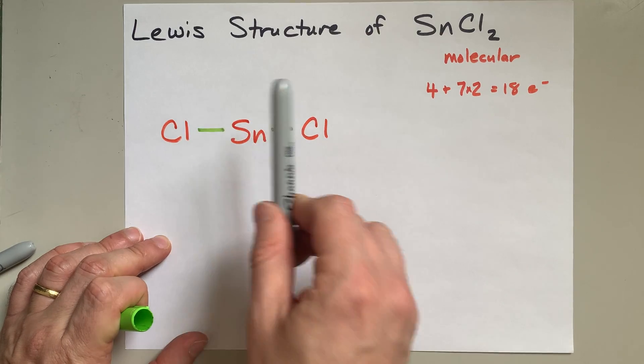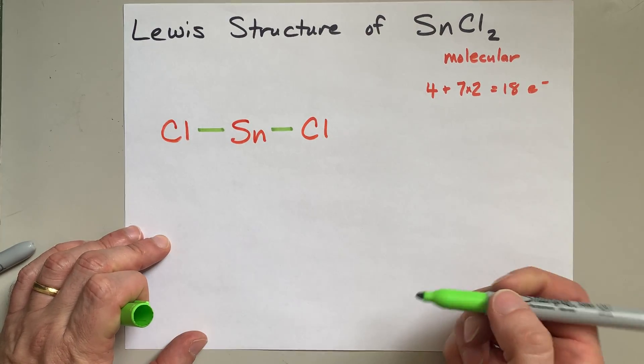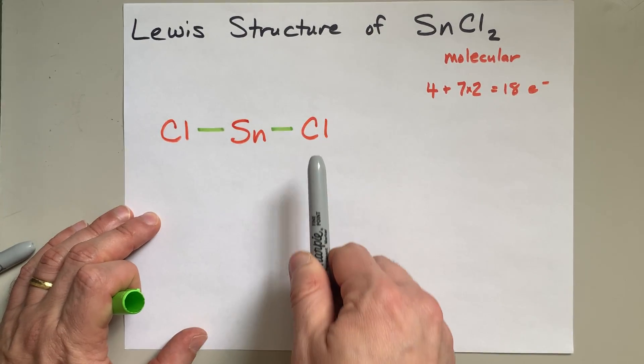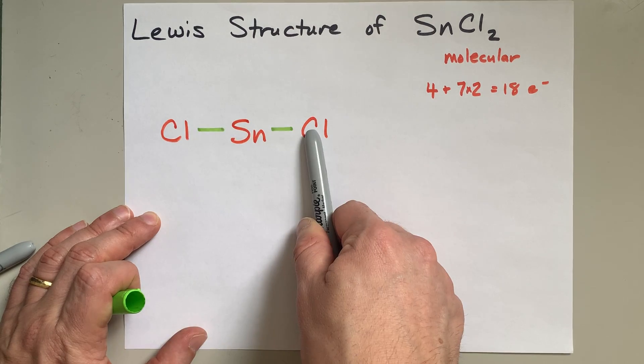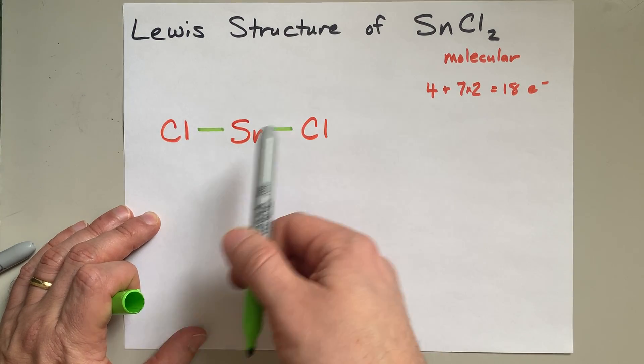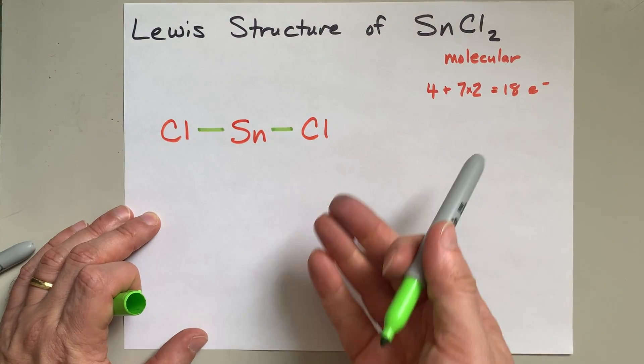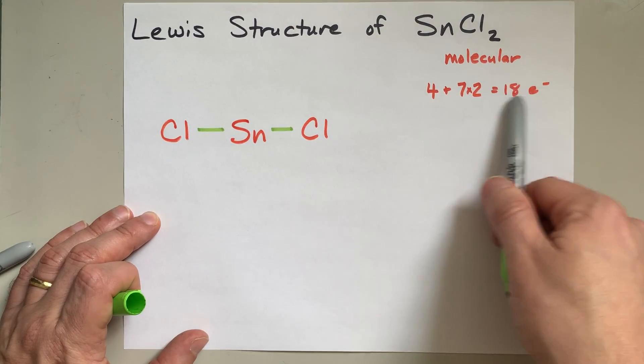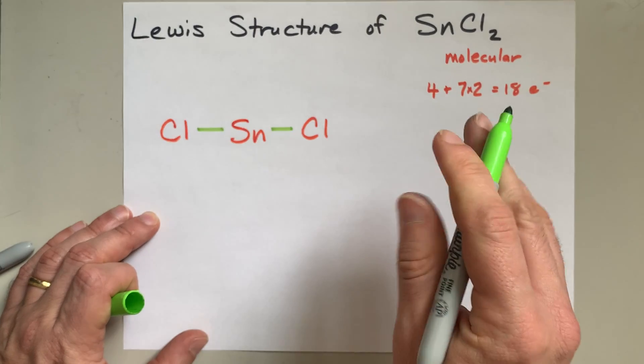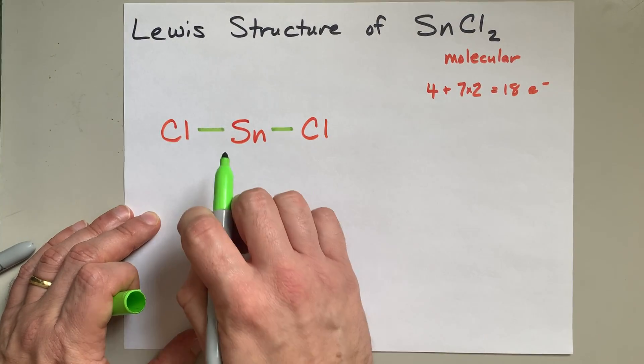This is two, four electrons that I've already dealt with. Now, I'm going to complete the octet on the outer atoms, because each of the chlorines needs eight electrons in its outer shell, but I can only count up to 18 electrons total, because that's all I'm allowed to deal with here.